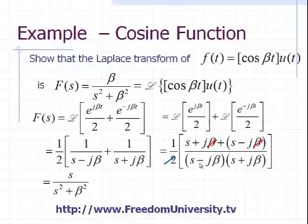And again, in the denominator, we have a difference of squares. s times s is equal to s squared. And the inner and outer products cancel. And then we have minus j beta times j beta leads to beta squared, where j is the square root of negative 1. And we square that. That becomes negative 1. But we have a minus sign. So a minus minus makes this a plus.